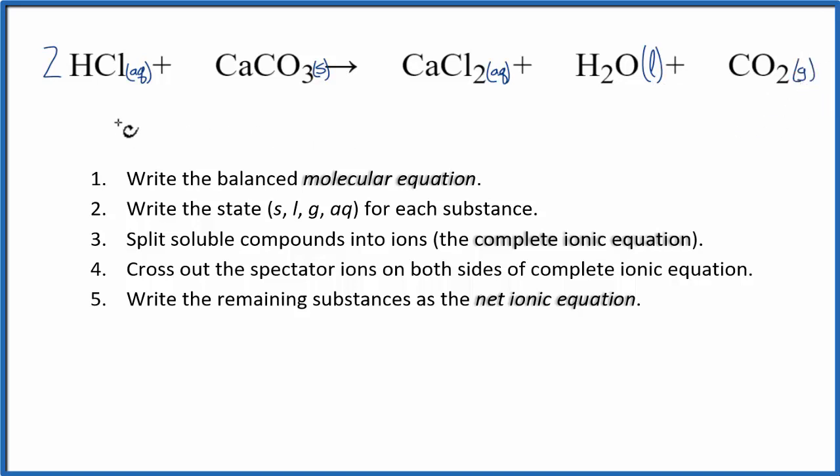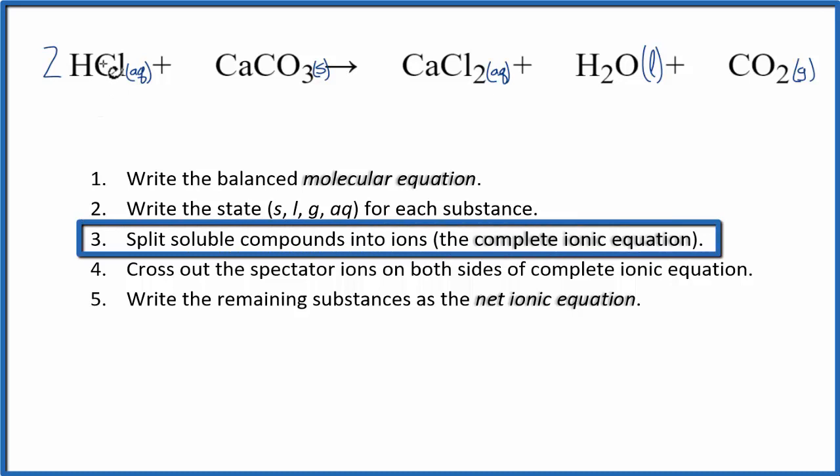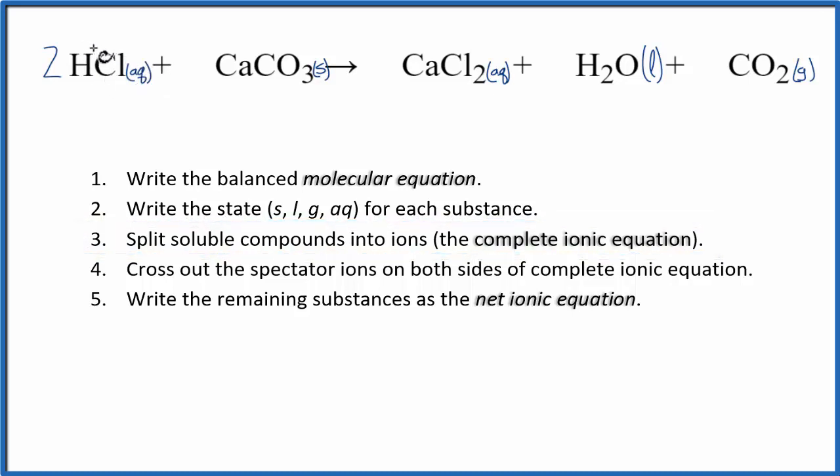Now we can split the soluble compounds into their ions. HCl is soluble in aqueous solution. Hydrogen is group 1, so it has a 1+ charge. Chlorine is group 17, so it has a 1- charge. Calcium is in group 2, that's 2+. And carbonate, CO3, is 2-. You can find that on a list of common polyatomic ions.